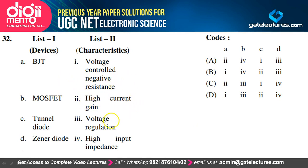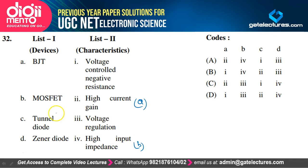Matching device characteristics: BJT has high current gain (A→2). MOSFET has high input impedance (B→4). Tunnel diode has voltage-controlled negative resistance (C→1). Zener diode is used as a voltage regulator (D→3). Option A satisfies the explanation.